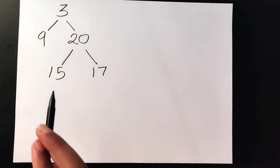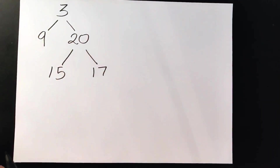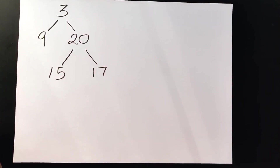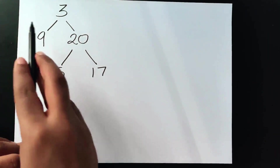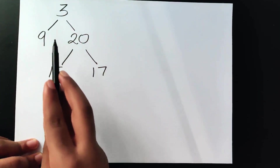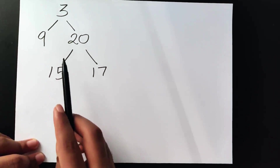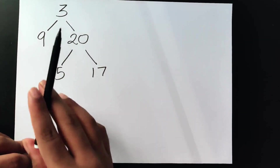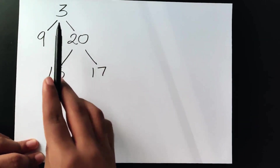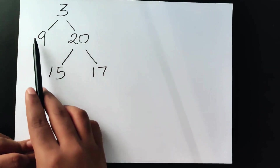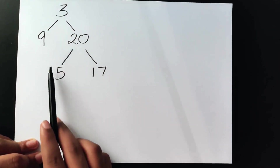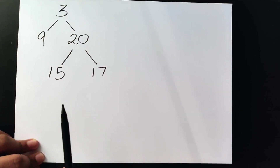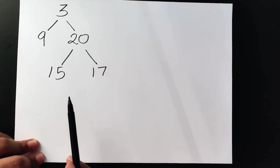Let's say we're given this binary tree. Normally when we're performing a binary tree level order traversal, we're going to be moving from left to right starting from the top. So if we were doing it normally, we would first do 3, then 9, then 20, then 15 and 17.